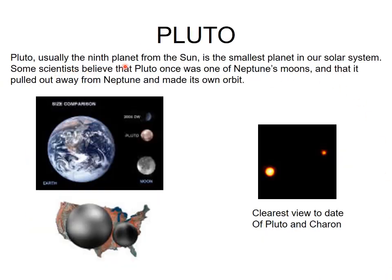Pluto is usually the ninth planet from the Sun and is the smallest planet in our solar system. Some scientists believe that Pluto was once one of Neptune's moons but pulled out and made its own orbit. You can see here the clearest view of Pluto and its moon Charon.